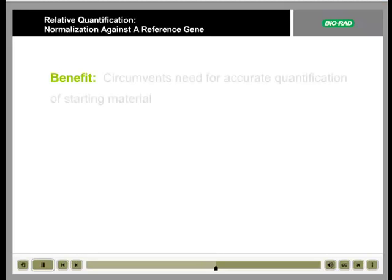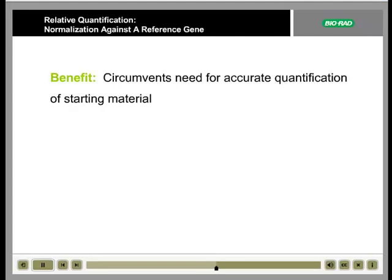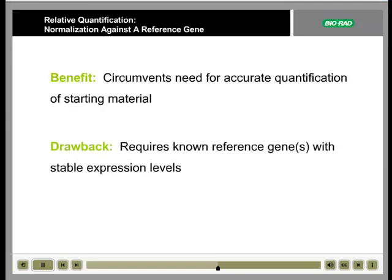Normalization against a reference gene circumvents the need for accurate quantification of the starting material. This is advantageous in studies where starting material is limited. The drawback is that the method requires at least one known reference gene that exhibits constant expression levels in all samples and whose expression is not changed by any treatments being investigated.